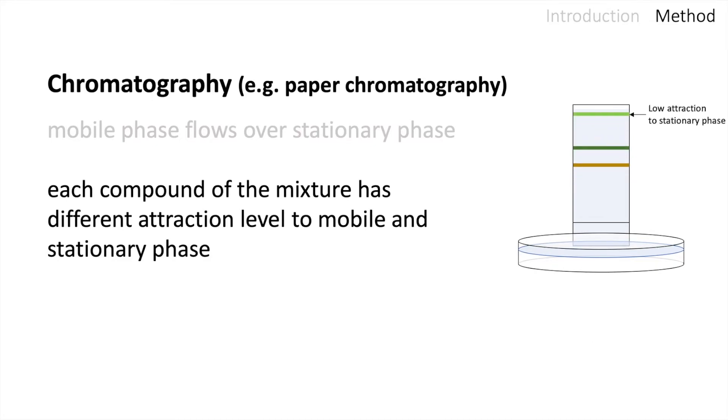The light green band on top shows a low attraction to the stationary phase. The orange band indicated by the arrow shows a higher attraction to the stationary phase compared to the greener bands. So the orange band did not travel as fast as the other bands.